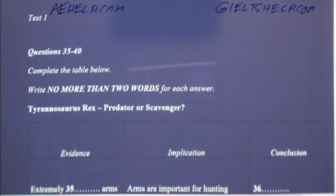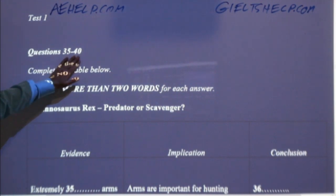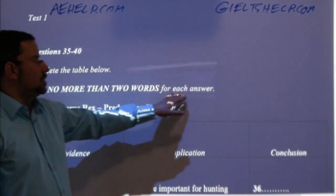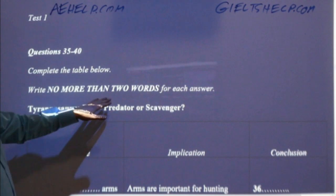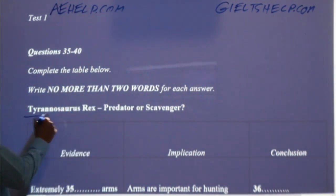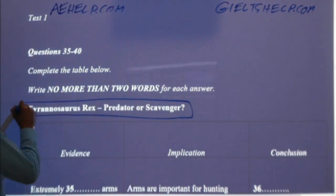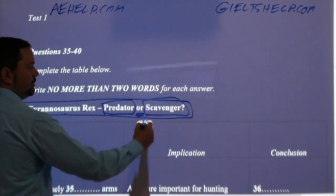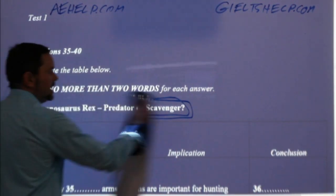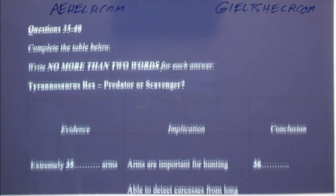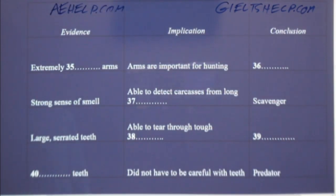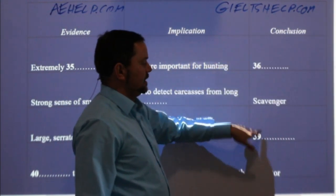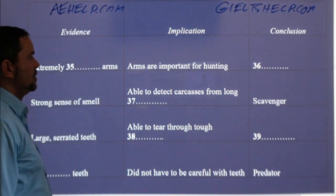Question 35 to 40 — you have to fill a table. Complete the table below. Write no more than two words for each answer. This is the predator or scavenger table for Tyrannosaurus rex. When you look at the table, you see scavenger, predator, and conclusion headings. You can figure out that these are a 50-50 — either a scavenger or predator. Extremely something arms — short — which is correct.